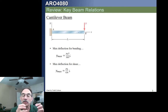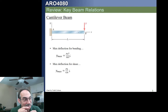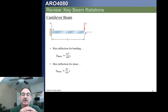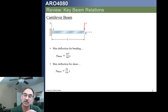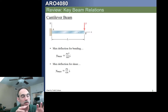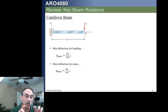Therefore, the normal deflections quickly dominate and we normally neglect the shear deformation. Now, the same thing is true when we go and try to do a finite element analysis. We're going to have the opportunity to either ignore shear deflections or try to account for them. Most of the time, we're going to account for only the deflections due to normal bending and completely ignore shear.